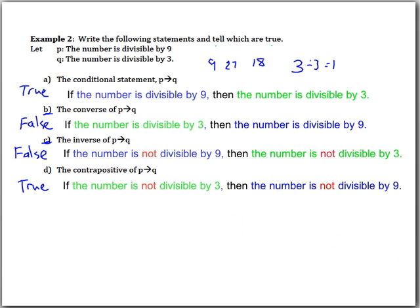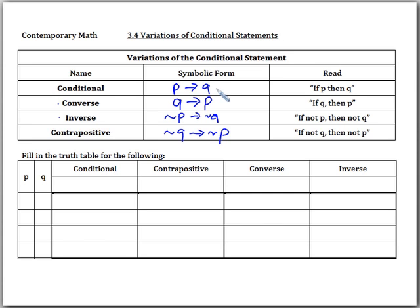Let's move on. What we want to do now is go ahead and find the truth tables for all four of these variations. For the conditional we're going to find this truth table, for the contrapositive that is this one right here, for the converse this right here, and for the inverse as well.